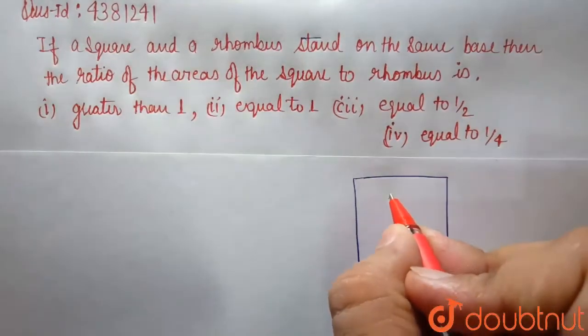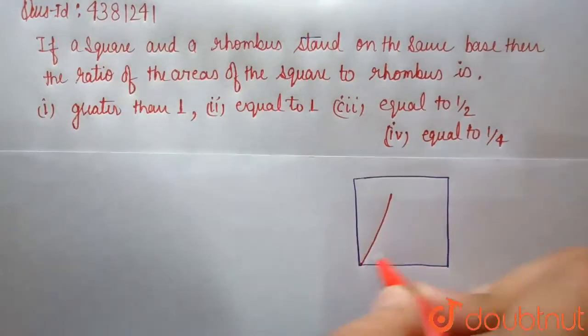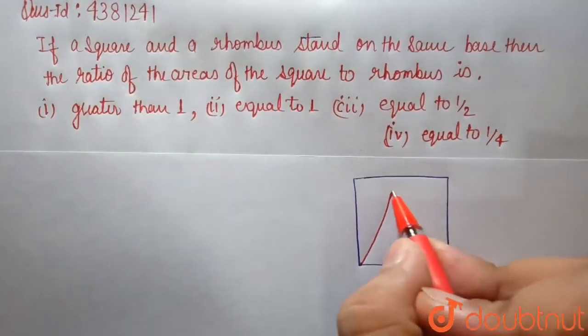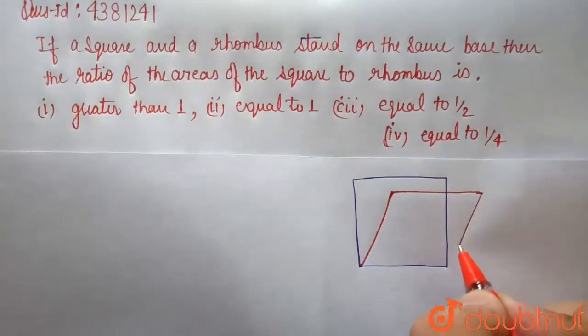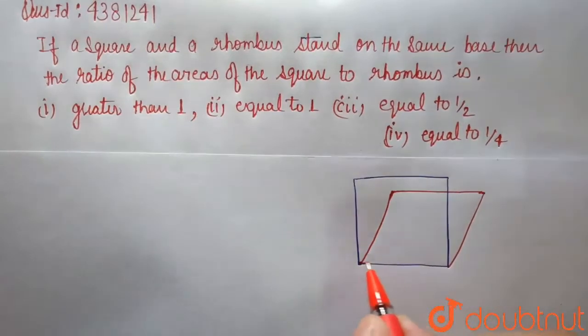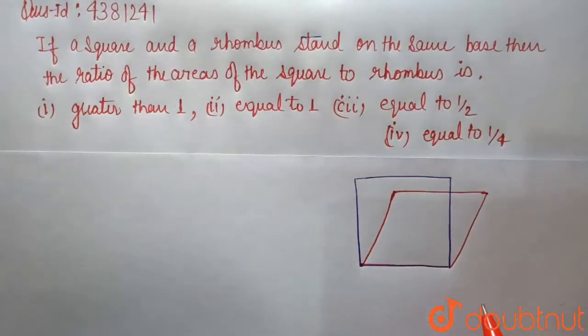This rhombus will have 4 equal sides, and the square will have 4 equal sides. And the other important thing is that the base is equal for both sides. This means all sides are equal.